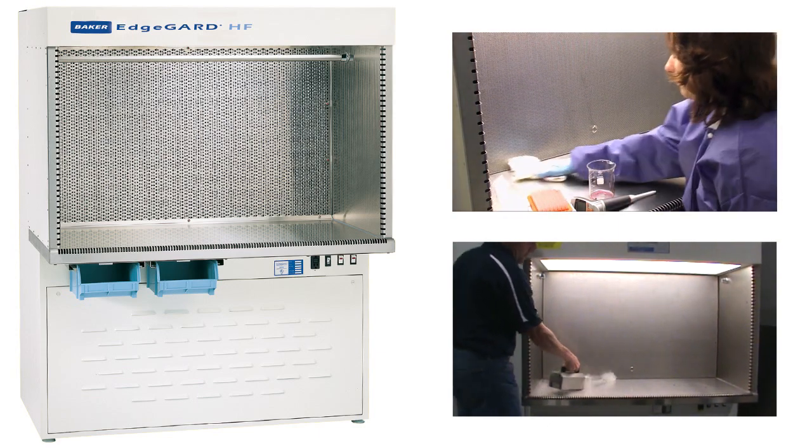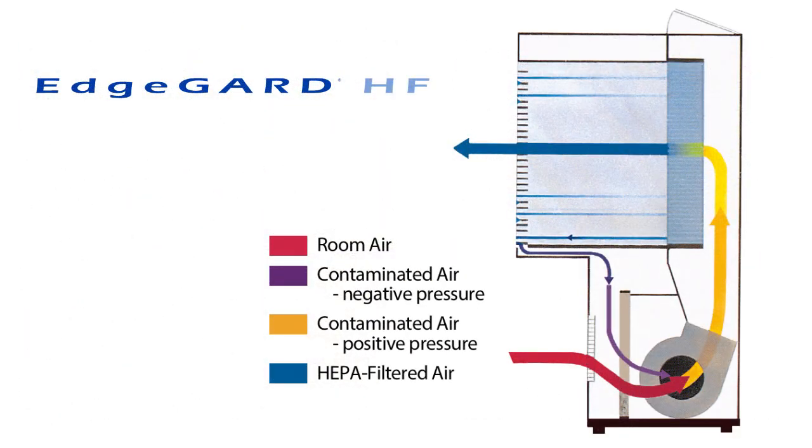Let's take a closer look at the technologies at work. The EdgeGuard HF provides ISO class 5 class 100 clean air by pulling in room air and passing it through a HEPA filter, which captures 99.99% of particulates at 0.3 microns.